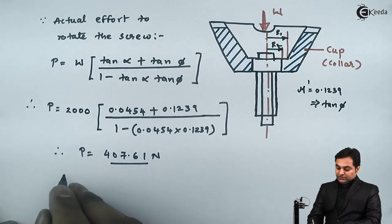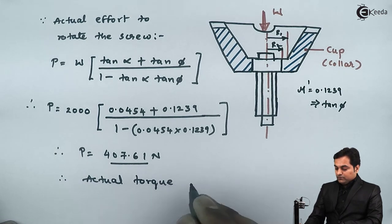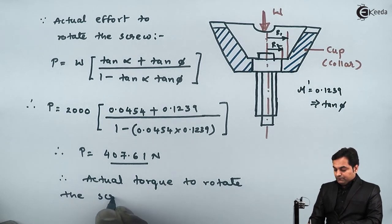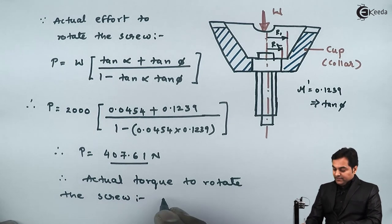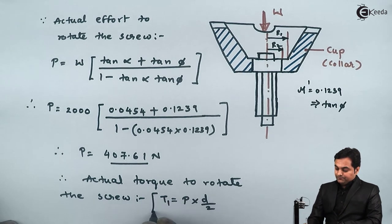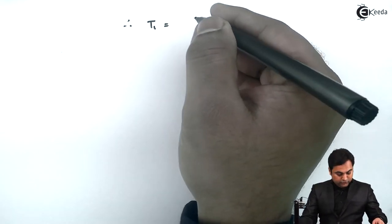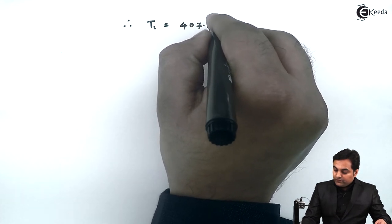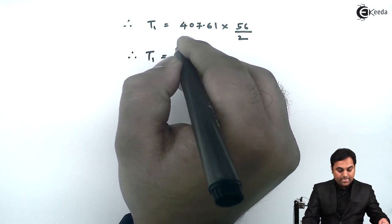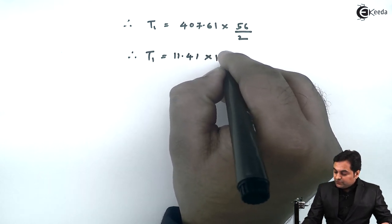After getting the actual effort, the actual torque to rotate the screw is T1 = P × d/2. Therefore, T1 = 407.61 × 56/2 = 11.41 × 10³ Newton-mm.